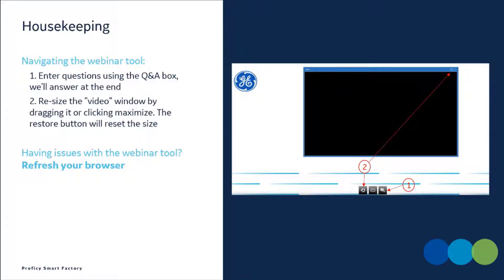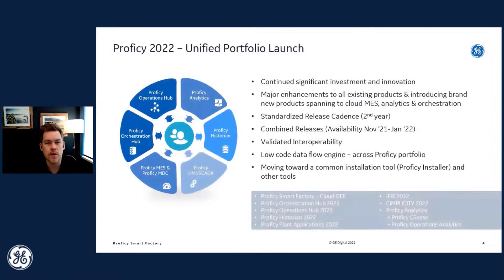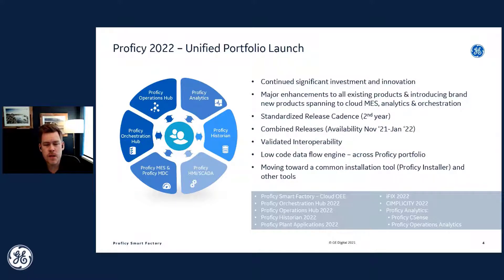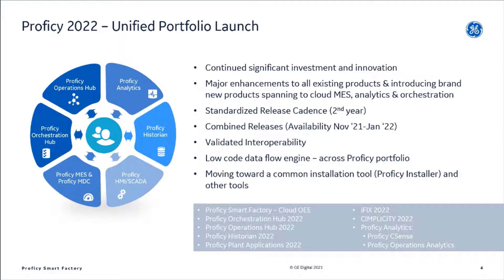This unified launch marks our second year of implementing a standard release cadence across the Prophecy portfolio of products. There are three things to highlight: first, we have a commitment to continue driving investment and innovation into our portfolio. Second, we've changed on-premise product versioning from individual release numbers to a consistent 2022 version to help customers understand interoperability and follow our release timelines. And lastly, we've integrated a low-code, no-code data engine — Prophecy Operations Hub — across our portfolio, and will continue to do so with these unified releases.